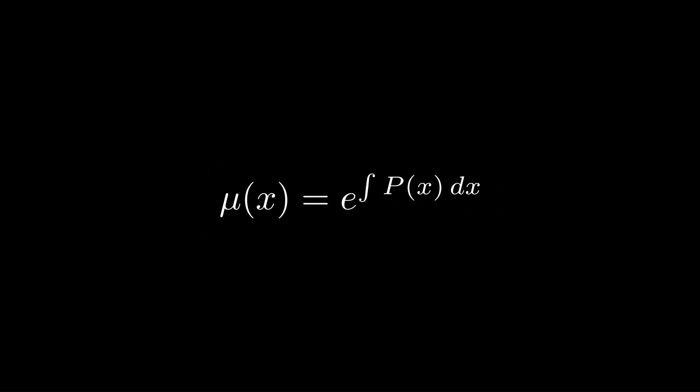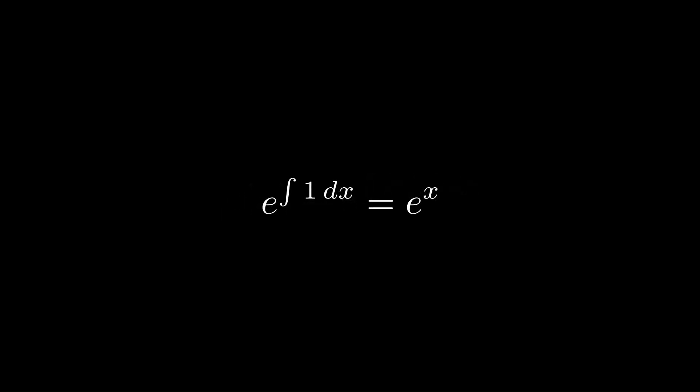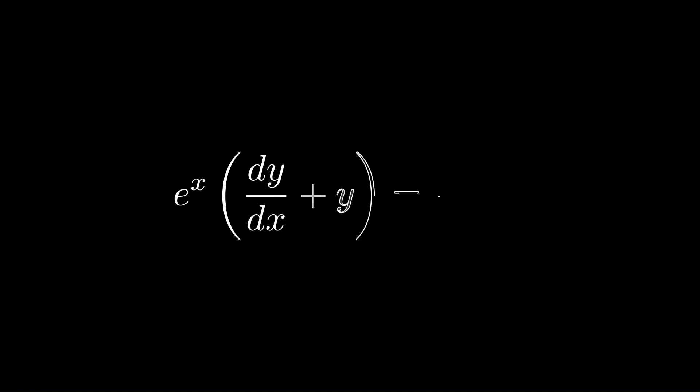We need to multiply by an integrating factor μ(x), which equals e to the integral of p(x) dx, to make the differential equation solvable. Since our p(x) was 1, the integrating factor is e^x.